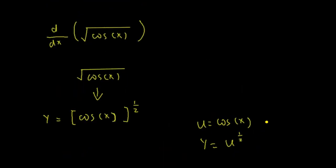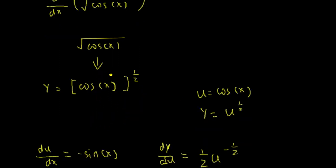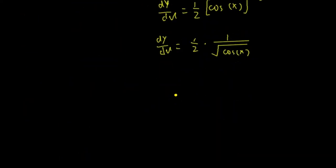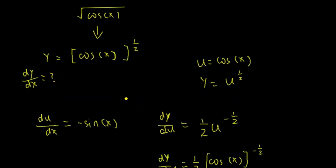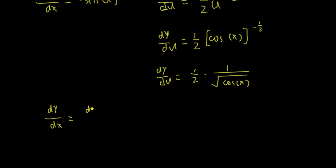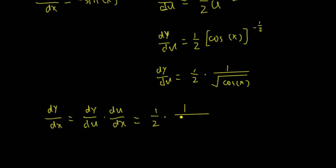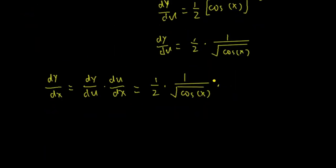We can rewrite dy/du as 1 over 2 times 1 over square root of cos. When we differentiate square root of cos — which is cos to the power of 1 half — we are looking for dy/dx. According to the chain rule, dy/dx equals dy/du times du/dx. So it's 1 half times 1 over square root of cos, times du/dx which is negative sine x.